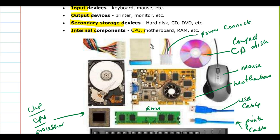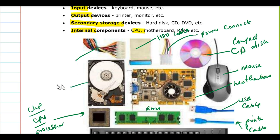This is the connector that we used to use to connect the hard disk — I can't remember what it was called, but this is the old-style connector we used to have in the old days. This is the power connector for the motherboard, and this is the hard disk. I told you how it looks — something like this.